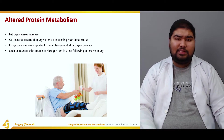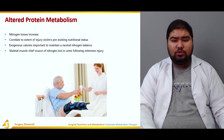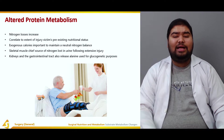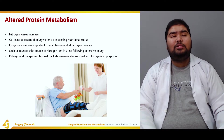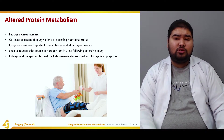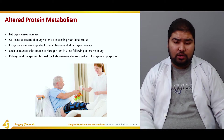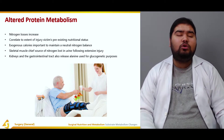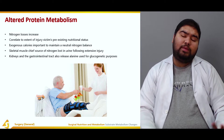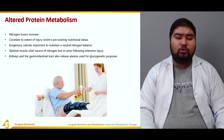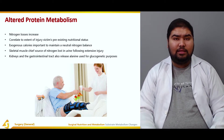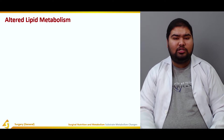Skeletal muscles are the chief source of the nitrogen lost in urine after injury. The kidney and GI tract also release alanine, which is used for gluconeogenic purposes.